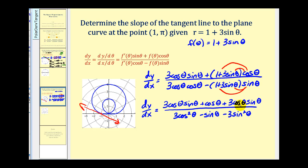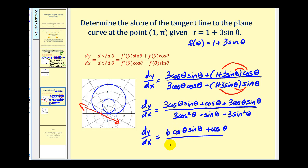Combining like terms in the numerator, dy/dx equals six cosine theta sine theta plus cosine theta, all divided by three cosine squared theta minus sine theta minus three sine squared theta. We could perform further trig substitutions here, but instead we'll substitute theta equals pi directly.